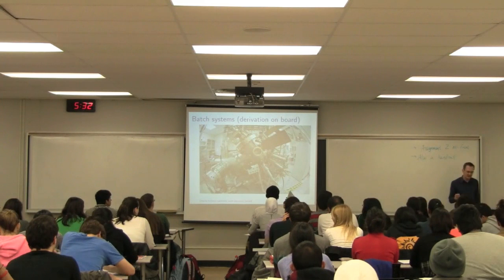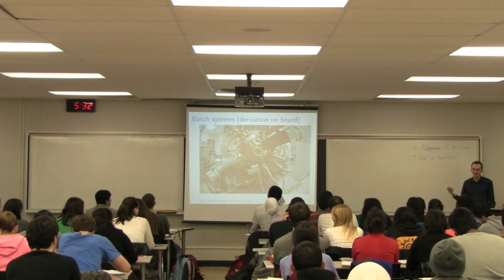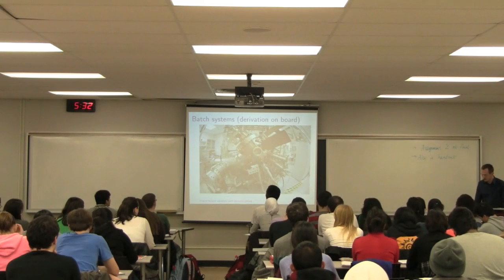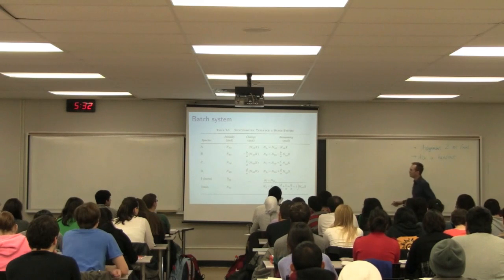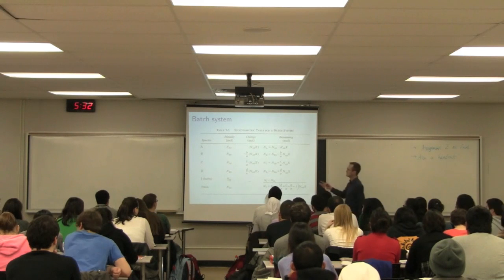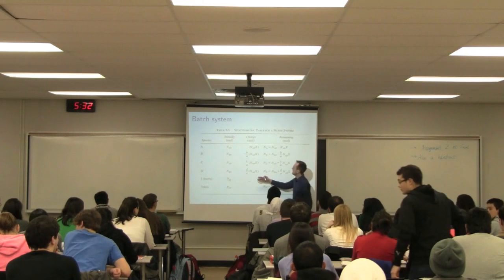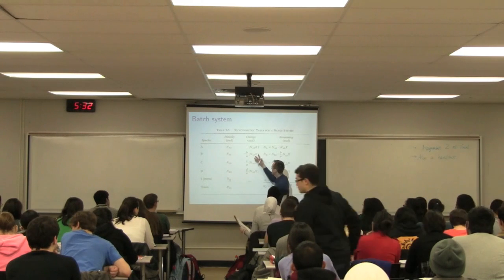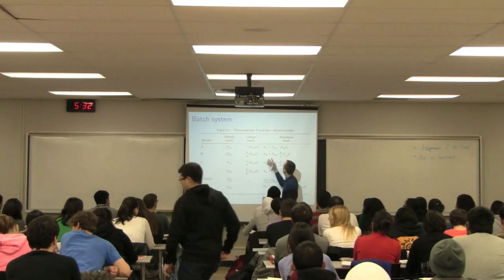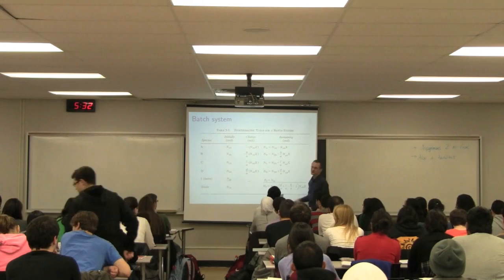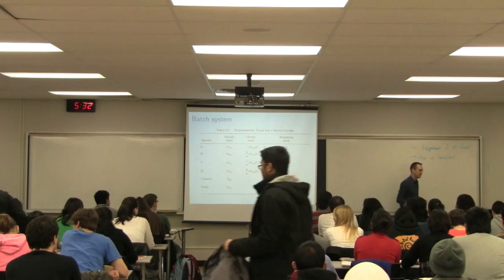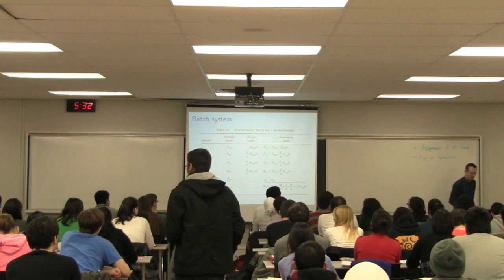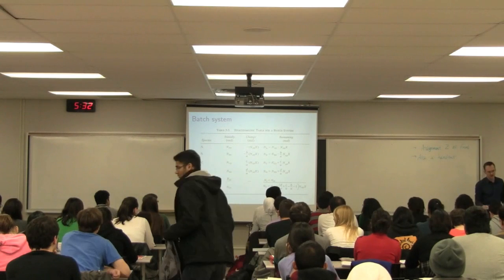What the company does is they put a certain amount of material in that batch: Nₐ₀, N_b₀, N_c₀. There's a certain change over time, and at the end there's a certain number of moles remaining. We derived that table from the previous class.